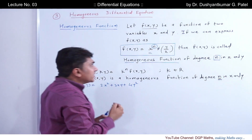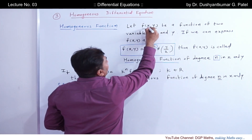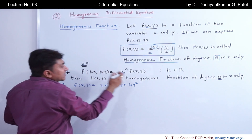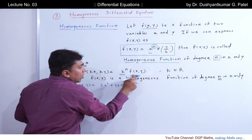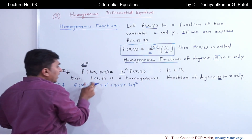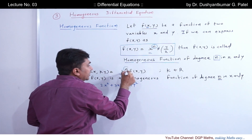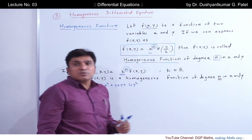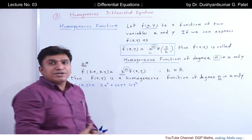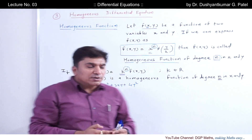That was the first definition. We can also state it a second way: if f(kx, ky) — replacing x with kx and y with ky — and if we can factor out all k and the original function f(x,y) remains inside, where k belongs to ℝ, then f(x,y) is said to be a homogeneous function of degree n, where the power of k is its degree. Using either method we can check whether a function is homogeneous and find its degree.